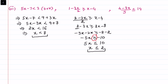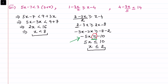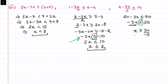As noted, whenever we multiply or divide by a negative number the inequality sign changes. For the third inequality, 4 minus 3x by 5 less than or equal to 14: multiplying by 5 gives 20 minus 3x less than or equal to 70, so minus 3x less than or equal to 50. Dividing by minus 3 changes the sign, giving x greater than or equal to minus 50 by 3.